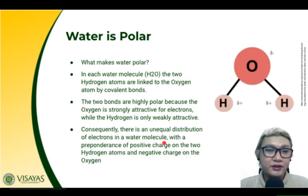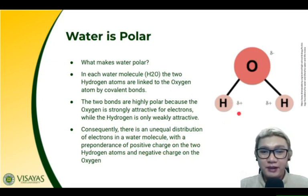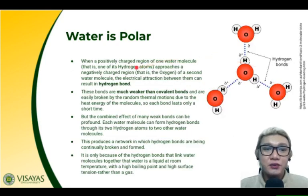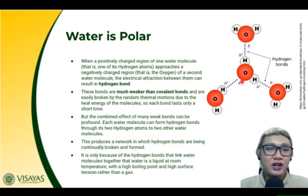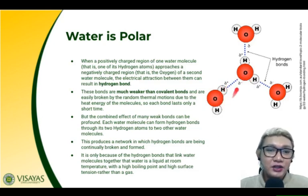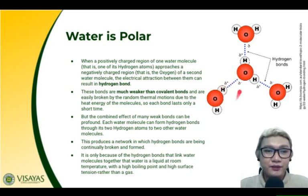It is a polar covalent bond, with a preponderance of positive charge on the two hydrogen atoms — a partial positive charge — and a partial negative charge on the oxygen atom. When the positively charged region of one water molecule, which is the hydrogen, approaches the negatively charged region, which is the oxygen of another water molecule, the electrical attraction between them can result in a hydrogen bond.